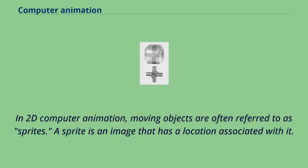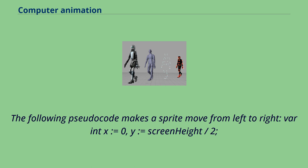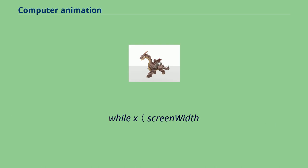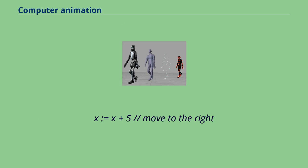In 2D computer animation, moving objects are often referred to as sprites. A sprite is an image that has a location associated with it. The location of the sprite is changed slightly between each displayed frame to make the sprite appear to move. The following pseudocode makes a sprite move from left to right: var int x = 0, y = screen_height / 2. While x < screen_width: draw background, draw sprite at (x, y), x = x + 5 (move to the right).